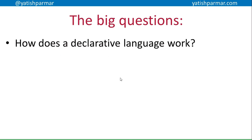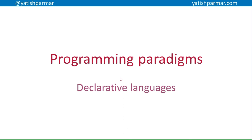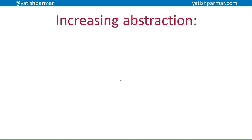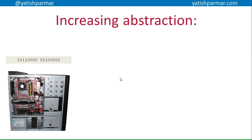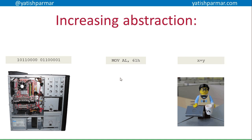So looking in this one at declarative languages and how a declarative language works. First of all, remember that the development of programming languages in terms of moving towards higher level has been about increasing the abstractions and removing having to deal with the actual hardware itself. So in the beginning you had machine code — some opcode, an address, and some data hardware-specific tied to a particular CPU — that then moved into Assembler, where there was use of mnemonics to make it easier to do things. And then you've got high-level languages where it's just like X equals Y.